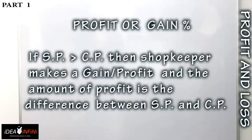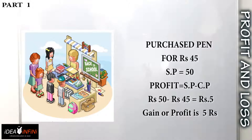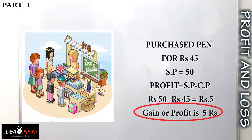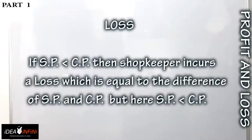The next term is profit or gain. Profit occurs when the selling price is greater than the cost price. If SP is greater than CP, the shopkeeper makes a gain or profit, and the amount of profit is the difference between SP and CP. In our pen example, he purchased it for rupees 45 and sold it for rupees 50, so the profit is 50 minus 45, which is rupees 5.